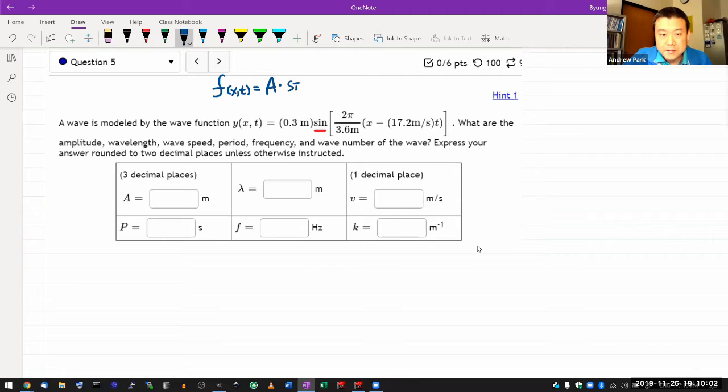Let me just skip to sine. Sine of, and following the order here it should be kx minus omega t. This is for a wave that's traveling in the plus x direction and this is the amplitude.